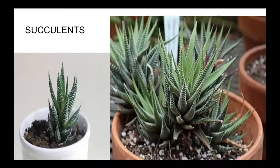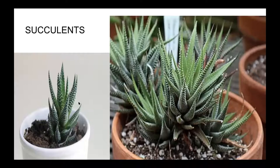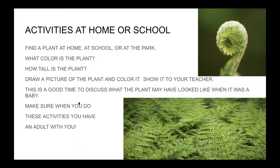This is a succulent, and it doesn't have to start from a seed. It can get started from a cutting. You can remove one of these blades — it's really part of a stem — stick it in a pot, and it'll form a new succulent. That's a pretty clever way of getting going too.